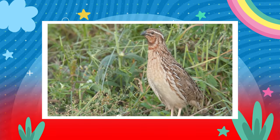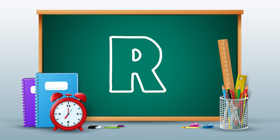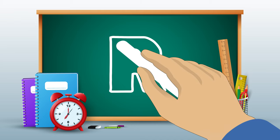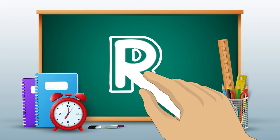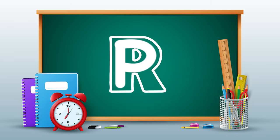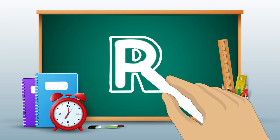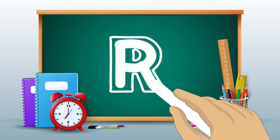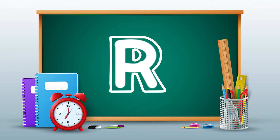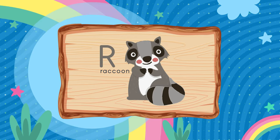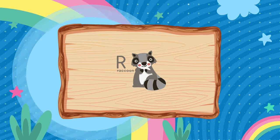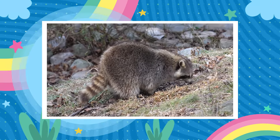Let's jump to the next one, the letter R. Pull down. Back to the top, around and in. And slant down. R is for Raccoon. Raccoon.